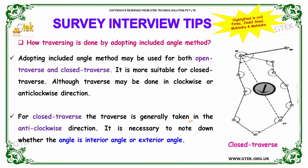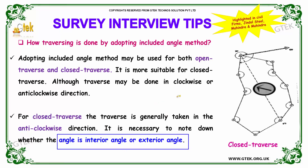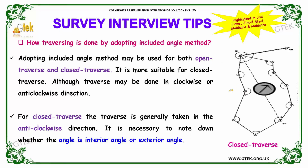Our next question is: how is traversing done by adopting the included angle method? The included angle method may be used for open traverse and closed traverse, though it is more suitable for closed traverse. The traverse may be done in clockwise or anticlockwise direction, but for closed traverse it is generally taken in anticlockwise direction. It is necessary to note whether the angle is an interior or exterior angle.